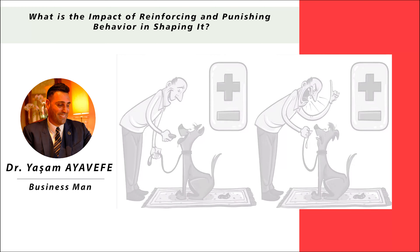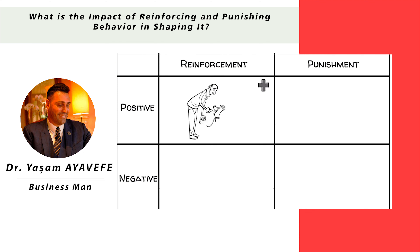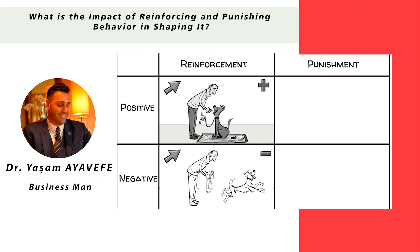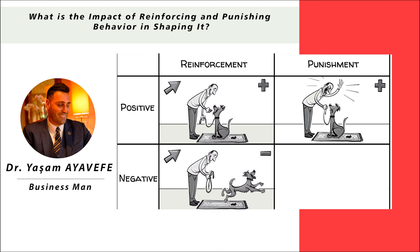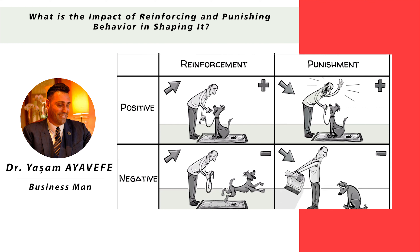We can draw the four options in a table. If reinforcement is positive, we add something pleasant, like a cookie, to increase the likelihood of a behavior. If reinforcement is negative, we still want to increase the desired behavior, this time by removing something unpleasant, like bleach. If punishment is positive, we add an unpleasant response to decrease the behavior. When punishment is negative, we also want to decrease behavior, now by removing something pleasant, like the comfy carpet.